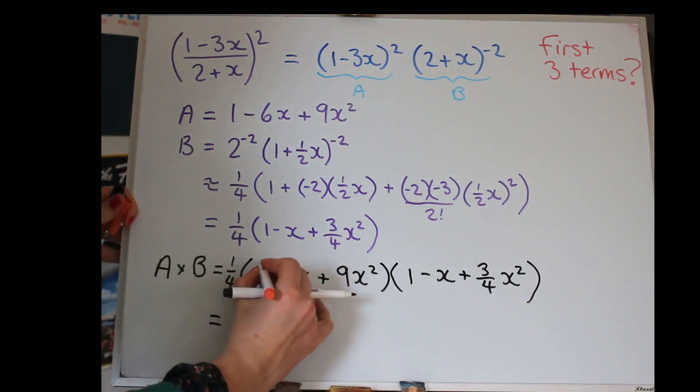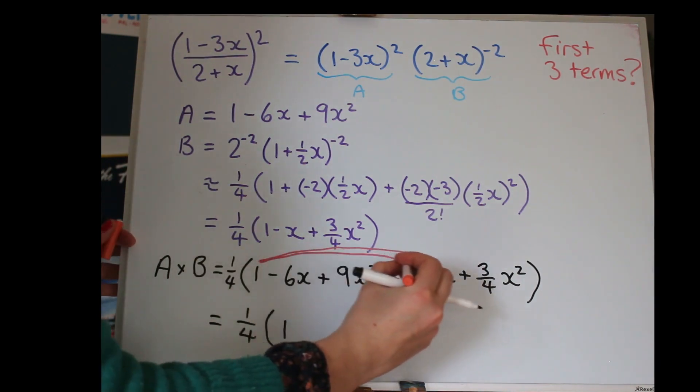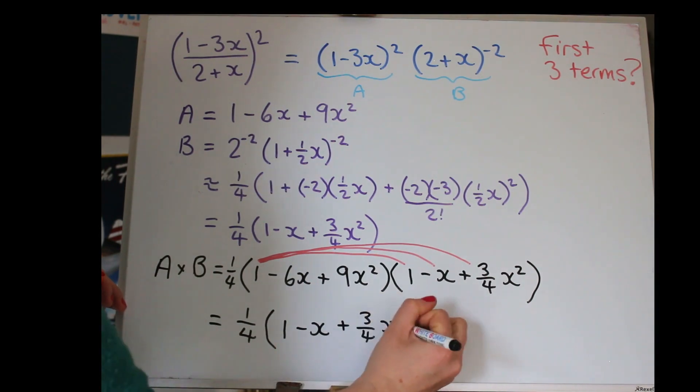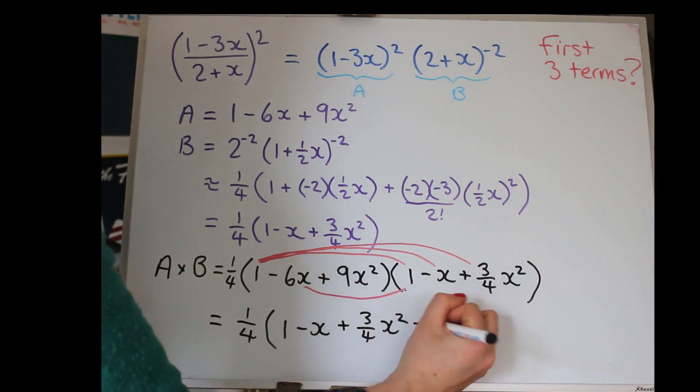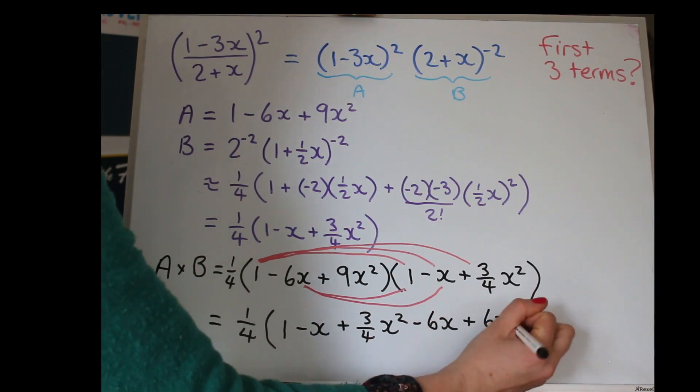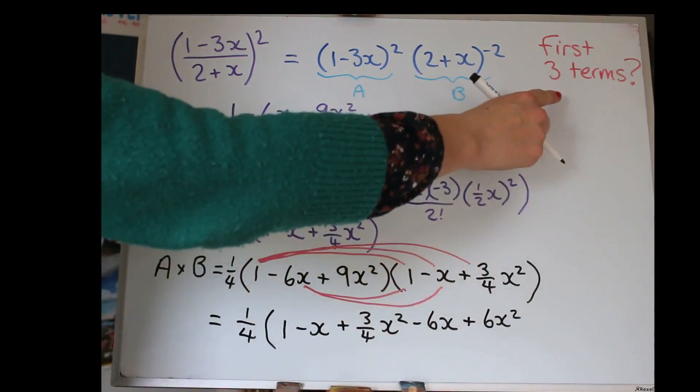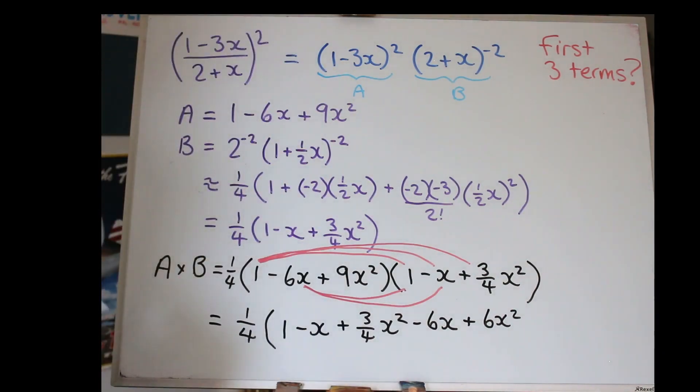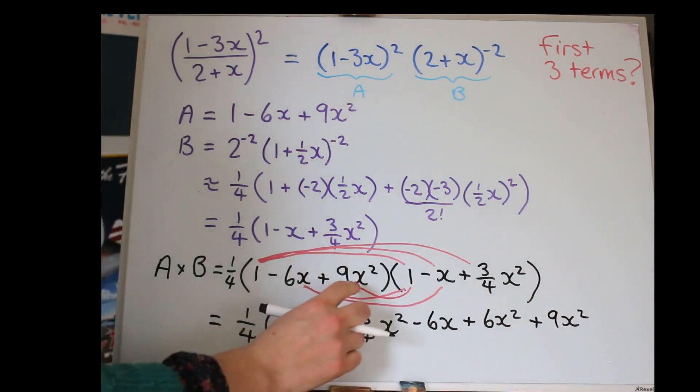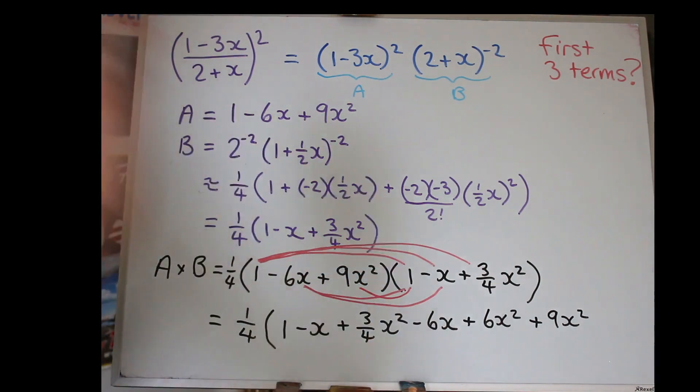Now, let's see what we get. We'll have one multiplied by one, which is one. We'll have one multiplied by minus x. And that one there. We'll have the minus 6x multiplied by one. And minus 6x multiplied by minus x. Now, the minus 6x times that one will give us a cubic term, which we don't want because we only want the first three terms. So, we're only going to go up to x squared. So, we'll forget that bit and move on to 9x squared. Multiply that by 1.